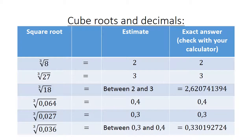Cube roots and decimals. The cube root of 8 is equal to 2. We know the cube root of 27 is equal to 3. So we can estimate any cube root in between — for example, the cube root of 18. We know it will be between 2 and 3 and the exact answer is 2,620741394. For a decimal cube root, 0,027: the cube root of 0,027 is equal to 0,3. And the cube root of 0,036 is between 0,3 and 0,4. The exact answer is 0,330194.